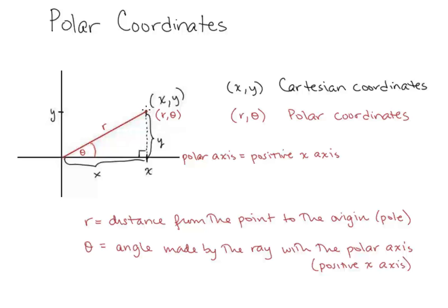This point, we were calling (x, y), and now we're going to call it (r, θ), where r represents the distance from that point to the origin, and θ represents the angle made with the ray for that point and the polar axis, which is the positive x-axis. So we can call this point by its x and y coordinates, or we can call it by its r and θ coordinates.